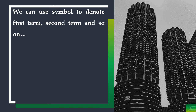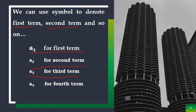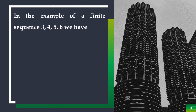We can also use symbols to denote the terms. A sub 1 for the first term, A sub 2 for the second term, A sub 3 for the third term, and A sub 4 for the fourth term. In the example of finite sequence 3, 4, 5, 6: our first term or A sub 1 is equal to 3, A sub 2 is 4, A sub 3 is 5, and A sub 4 is 6.